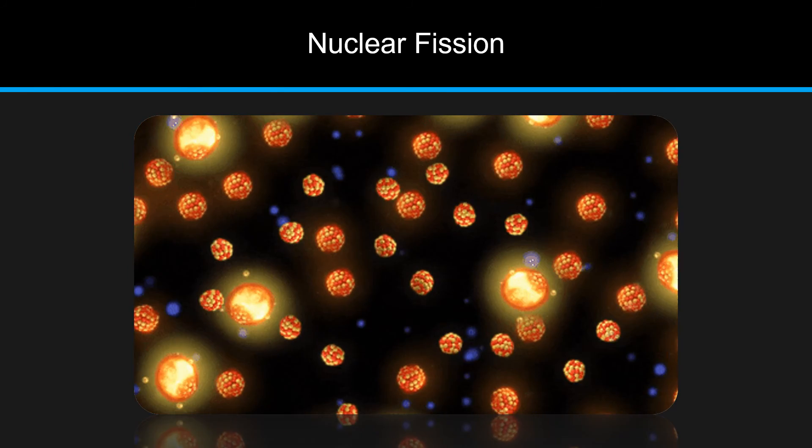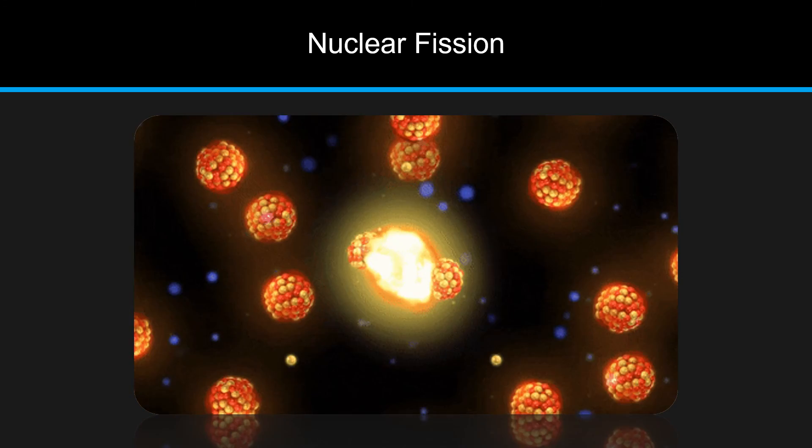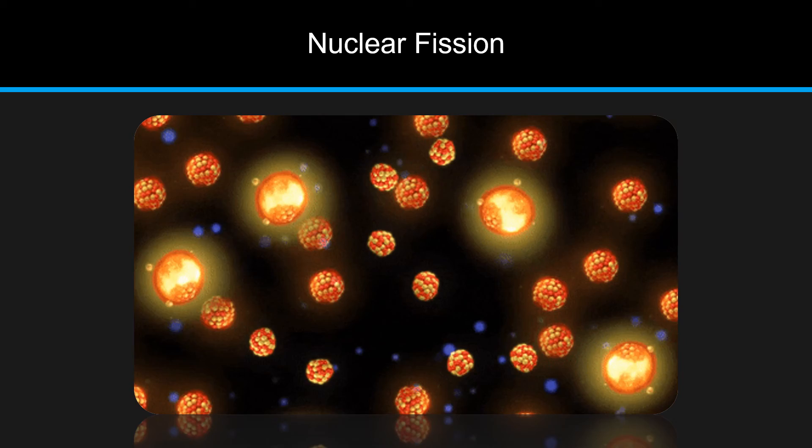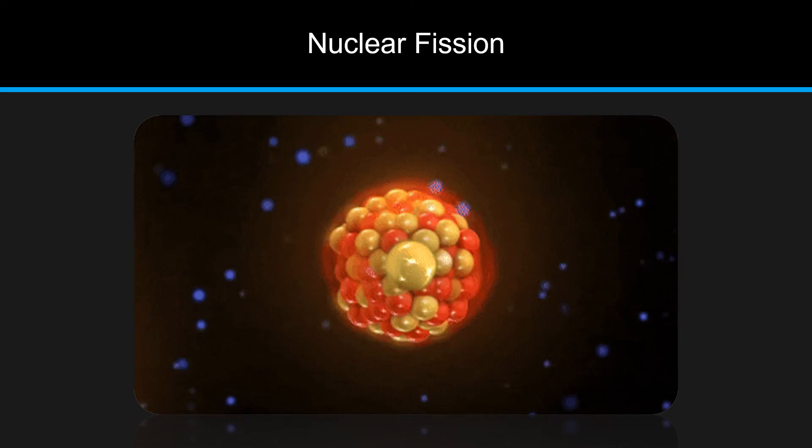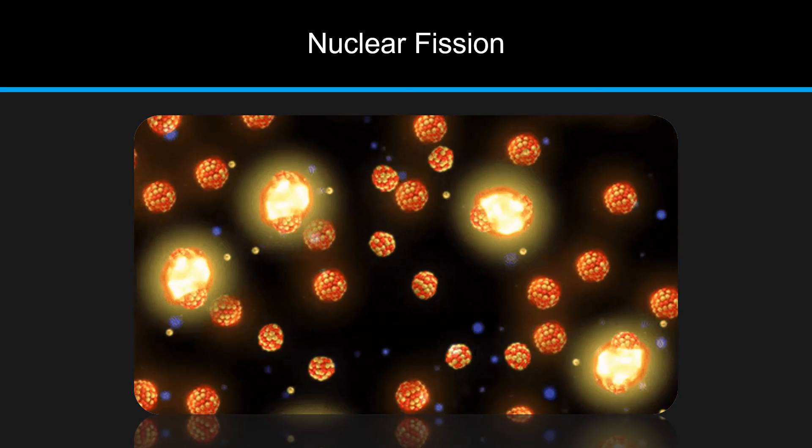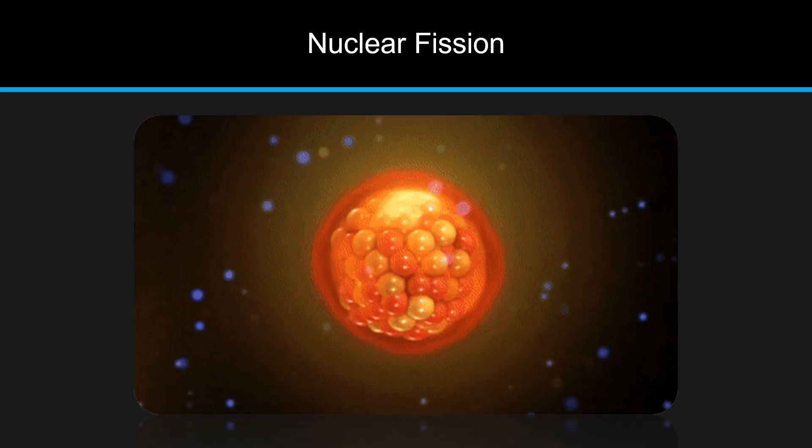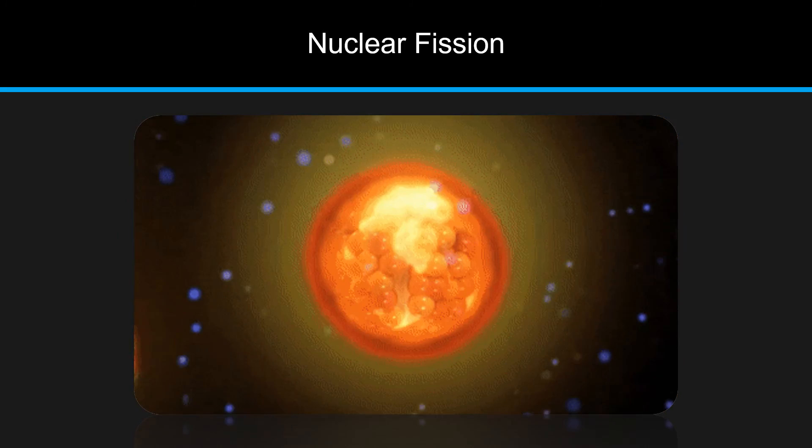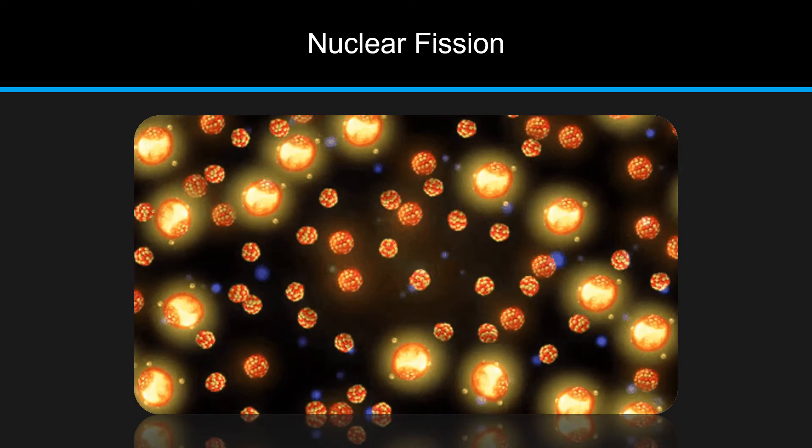Nuclear fission: atoms are split apart, which releases energy. An example is when a neutron collides with a uranium atom and splits it, releasing a large amount of energy in the form of heat and radiation. More neutrons are also released when a uranium atom splits.